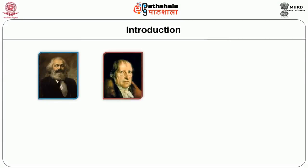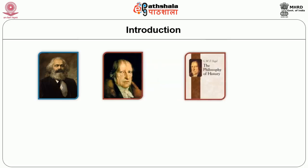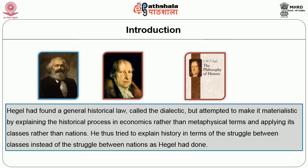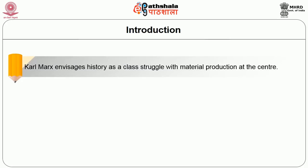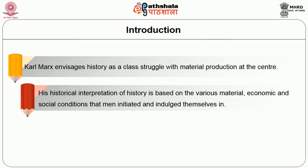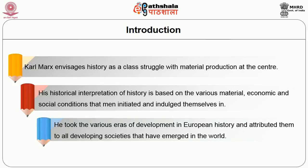Karl Marx was greatly influenced by the writings of Hegel, especially his writings on the philosophy of history. Karl Marx believed that Hegel had found a general historical law called the dialectic, but attempted to make it materialist by explaining the historical processes in economics rather than metaphysical terms and applying it to classes rather than nations. He thus tried to explain history in terms of social struggle between classes instead of the struggle between nations as Hegel had done. Karl Marx envisages history as a class struggle with material production at the center, interpreting history based on the various material, economic and social conditions that humans initiated and indulged in.